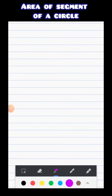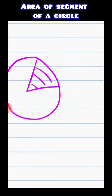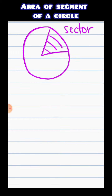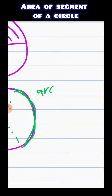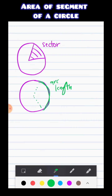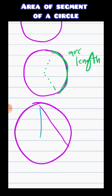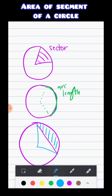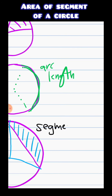Next thing is if we want to know the area of a segment. So just a quick review: this thing right here is called a sector, this thing right here is called an arc, and this thing right here — say we have an interior angle — this right here is what we call a segment.